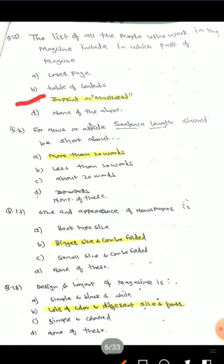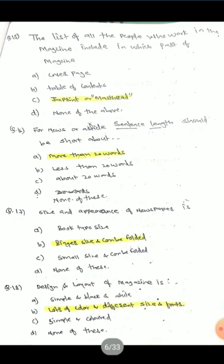Question 16: For a news or article, sentence length should be short — about how many words? Options are: A) more than 20 words, B) less than 20 words, C) about 20 words, D) none of these. The correct answer given is more than 20 words.